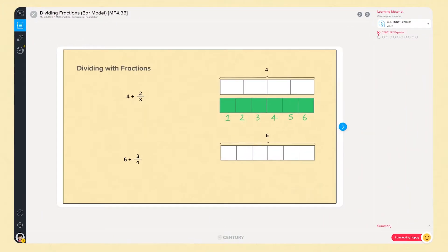Our Key Stage 3 content contains visual representations of key mathematical concepts. This includes bar modelling in several areas including fractions, ratios, and equations.